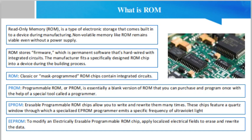ROM chips come built into an external unit like flash drives and other auxiliary memory devices, or installed into the device's hardware on a removable chip. Non-volatile memory like ROM remains viable even without a power supply.